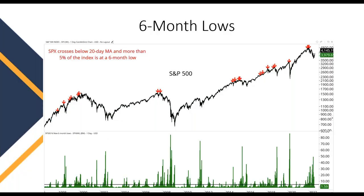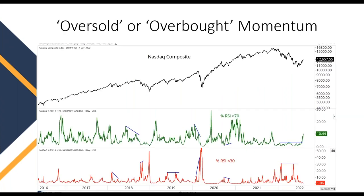We not only want to look at the trends of individual stocks — whether they're above certain moving averages or at new highs or lows — we can also look at market breadth from a momentum standpoint. A common gauge of momentum is the Relative Strength Index, the RSI. It's probably one of the default indicators on many charting platforms, and it tells us if momentum is rising or falling. Some people use RSI to gauge an overbought or oversold market.